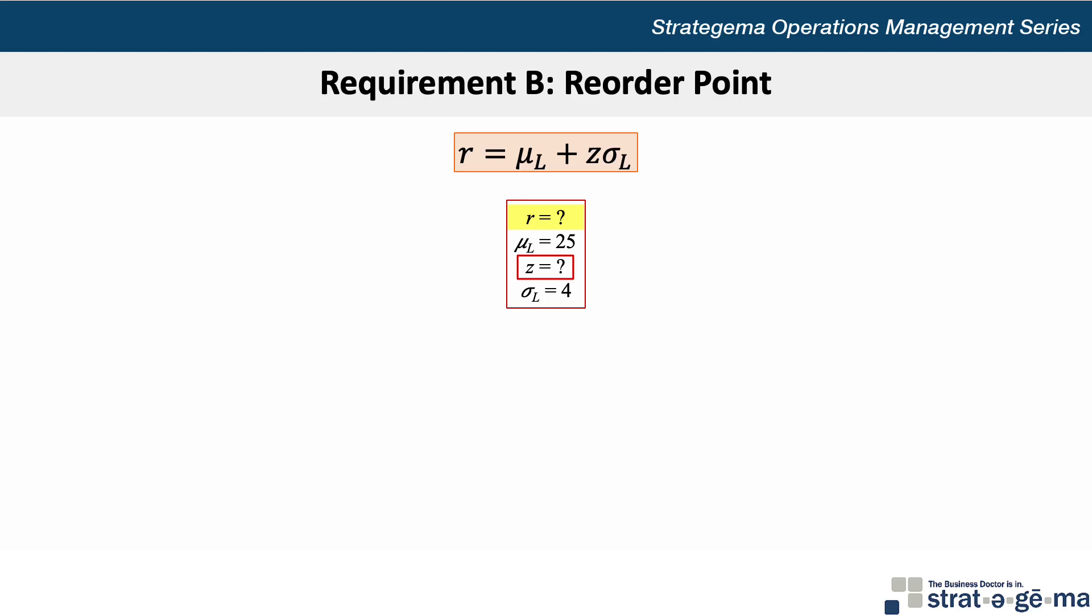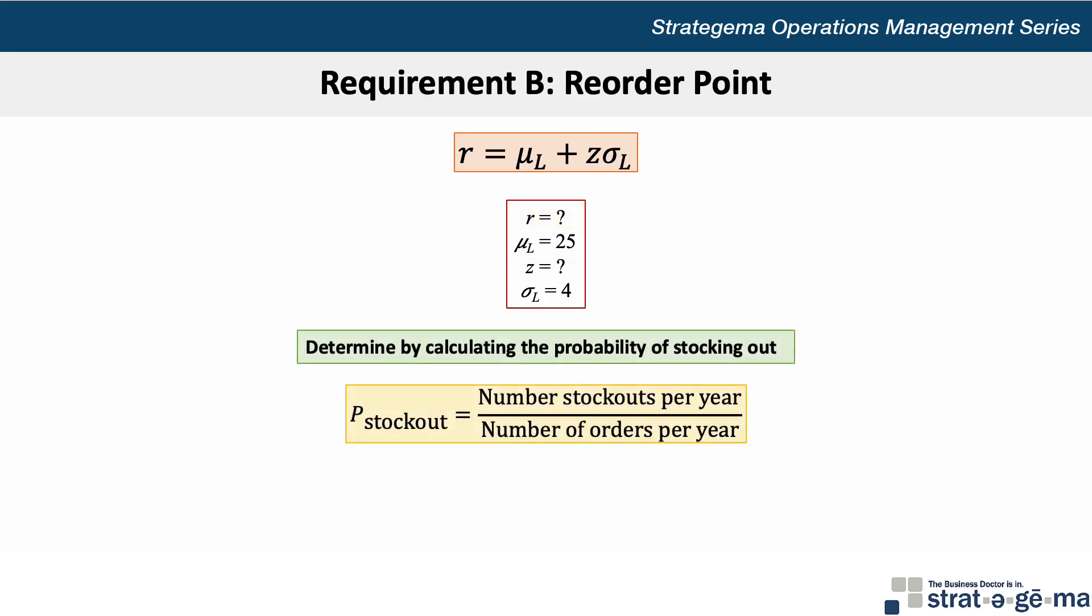The first step for that is to determine the probability of stocking out, which equals the number of stockouts per year divided by the number of orders per year. The data doesn't tell us the number of orders per year, but based on the EOQ, we can calculate that as the demand divided by the quantity, or 500 annual demand divided by the 31.62 EOQ to get 15.81 orders per year.